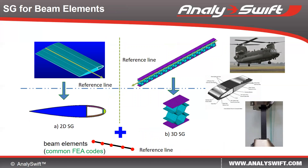For beam-like structures, we use beam elements for structure analysis. The structure genome can be chosen to be the cross-section if the structure can be modeled as made of piecewise constant cross-sections, or a 3D block if the beam is also heterogeneous along the beam reference line. We can homogenize the structure genome to produce equivalent beam properties for beam analysis, then perform de-homogenization to compute the local stresses, strength, and failure indices within the structure genome after obtaining the loads from the beam analysis.